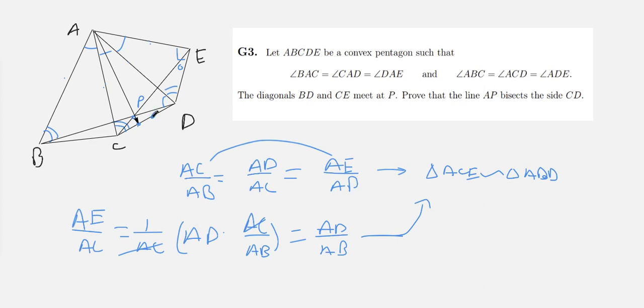Now, we have that... So first I want to mark the intersection of BD and AC. I'm going to call that Q. And I'm going to mark the intersection of AD and CE. I'm going to mark that as R.